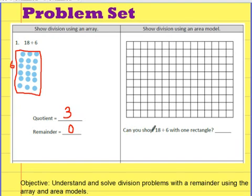Now, can you show 18 divided by 6 with one rectangle? Yes, I can. I can show it with one rectangle. One, two, three, four, five, six. One, two, three. I know that there's 18 on the inside because 6 times 3 is 18. So can you show with one rectangle? Yes, I can.